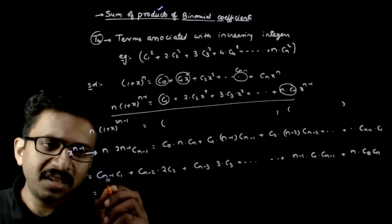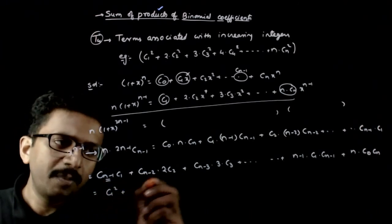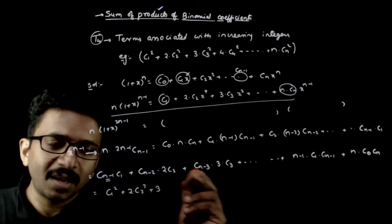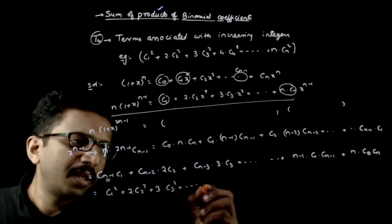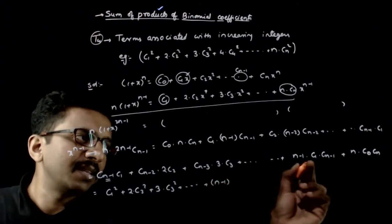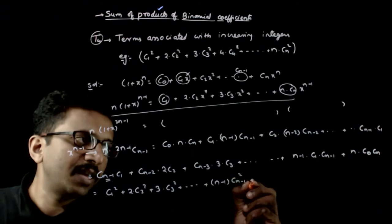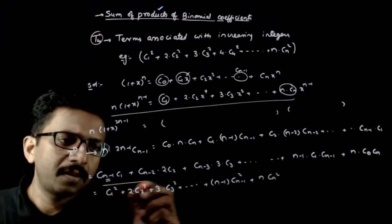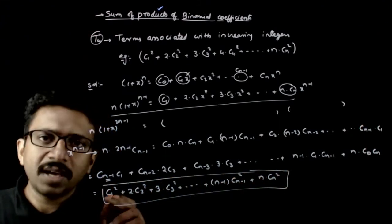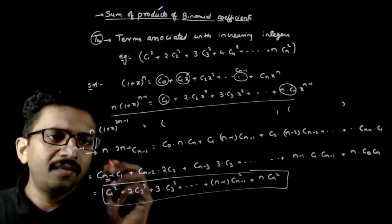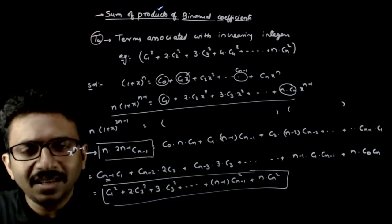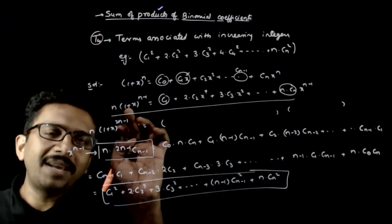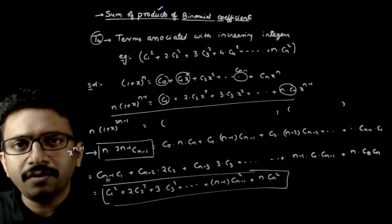So c1² plus 2·c2² plus 3·c3² and so on equals n times (2n-1)C(n-1). Again, if you have an alternate plus-minus sign, we consider a minus sign in one of the expansions and then take the product of the two expressions.